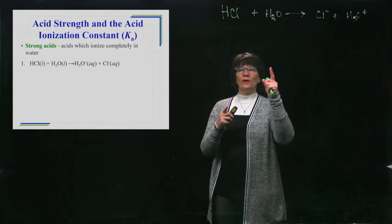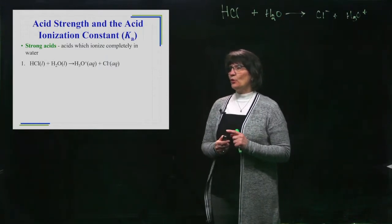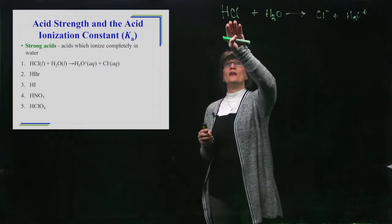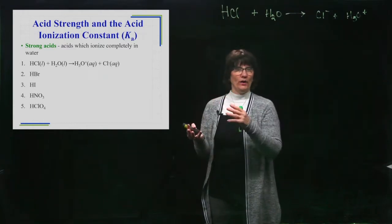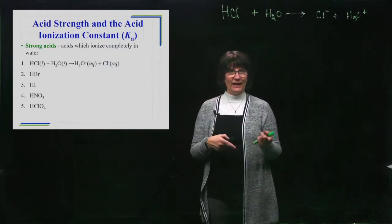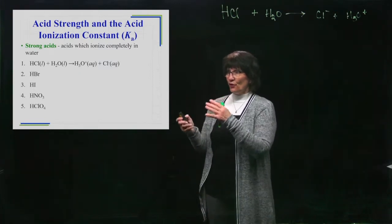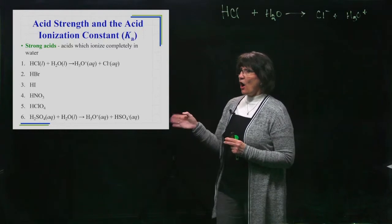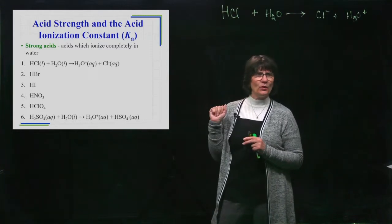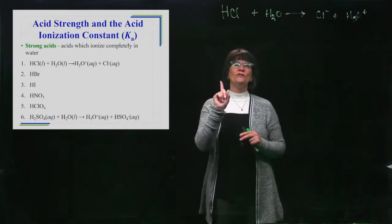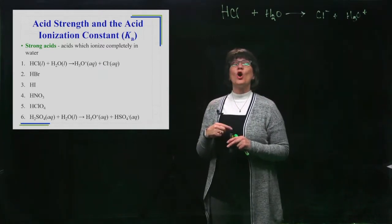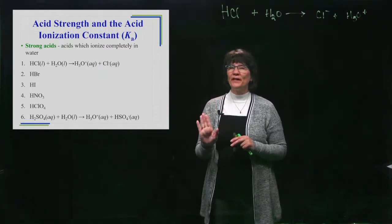We have HBr, HI - hydrobromic and hydroiodic. Then we have nitric acid HNO3, perchloric acid HClO4. There's one more and that's sulfuric acid H2SO4. This last one is a strong acid only for its first hydrogen. Sulfuric acid is a diprotic acid with two hydrogens on it. It's only the first hydrogen that completely ionizes.